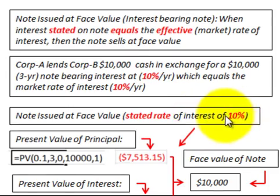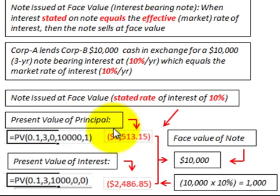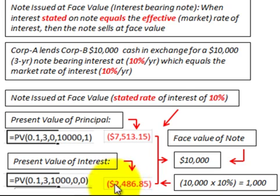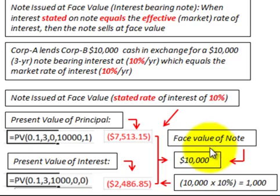The note is comprised of the present value of its principal amount of $10,000, discounted back at three years at 10% interest, giving us $7,513. Then we take the present value of the interest element: a $1,000 payment per year on this note, discounted back at the end of the period for three years at 10%. Those payments have a present value of $2,486. Adding $7,513 plus $2,486 gives us $10,000, which equals the face value of the note.